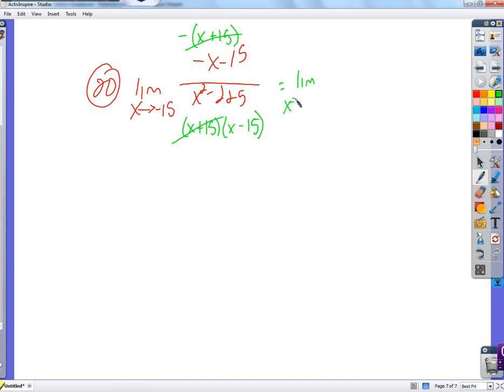So the limit as x approaches negative 15 of negative 1 over x minus 15. That's negative 1 over negative 30, which is just 1 over 30.